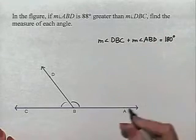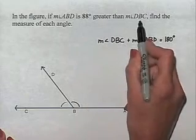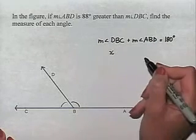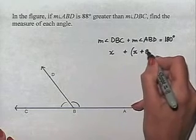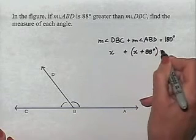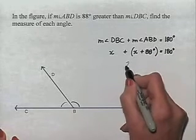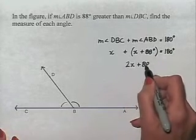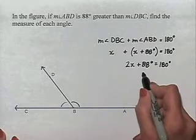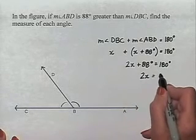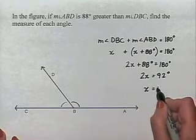We're told that the measure of angle ABD is 88 degrees greater than the measure of the other angle. If we let X equal the measure of angle DBC, then the measure of angle ABD will be X plus 88 degrees, giving us an equation that we can solve for X. Combining like terms: X plus X is 2X, plus 88 degrees equals 180 degrees. Subtracting 88 degrees from both sides gives us 2X equals 92 degrees, and dividing both sides by 2 gives us X equals 46 degrees.